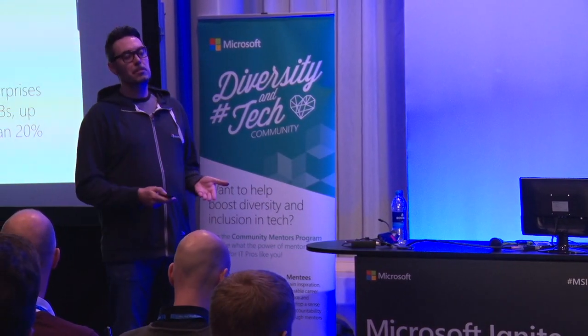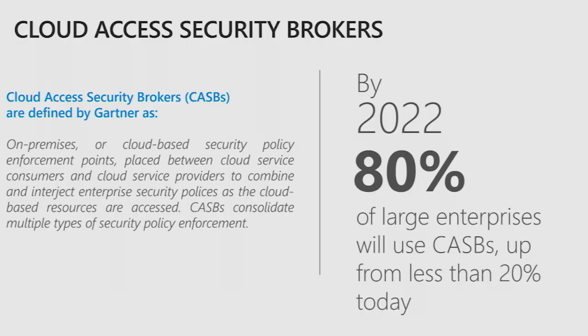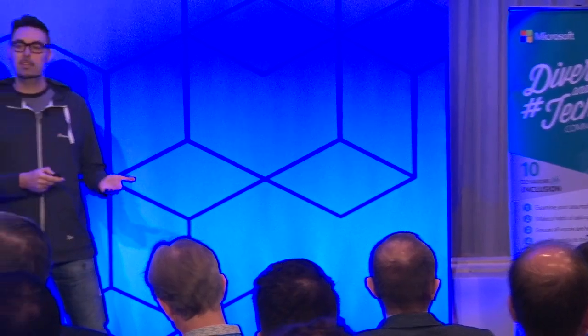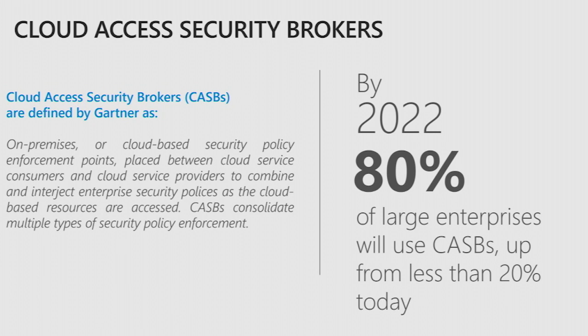To be able to secure those applications, we need something called a CASB. Here you have Gartner's explanation about what CASB is. You can think about a CASB — Cloud Access Security Broker — as a solution that sits between the user and the application. The goal is to provide control and security for the user and the data traveling between those two endpoints. By 2022, 80 percent of large organizations will have a CASB.